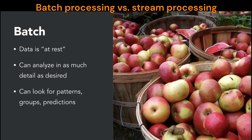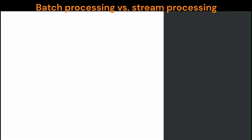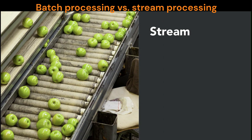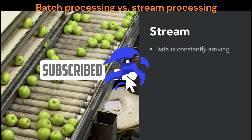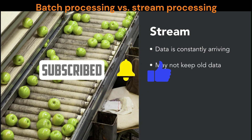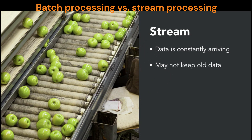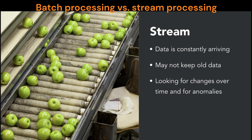You create the data, put it together, say it's done, then do the analysis and do your work. Compare that to stream. Instead of having your baskets of apples, they are now on a conveyor belt. The data is constantly arriving. You may not even keep the old data — maybe you just have a window of data that you're saving, because you're looking for changes over a short period of time, or looking for significant anomalies that might trigger a problem with the system — a potential breakdown with a machine, an attempt at fraud — something that triggers the next actions that result from your analysis.